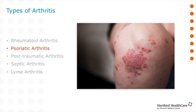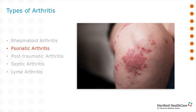Psoriatic arthritis is typically associated with the skin disease psoriasis. While it may involve larger joints such as the knees, it often presents with symptoms in smaller joints like the tips of the fingers or toes. A hallmark of this disease is skin changes that occur over the extensor surfaces of the elbow or the knees. Like rheumatoid arthritis, this is a form of immune system disorder.